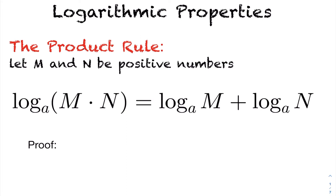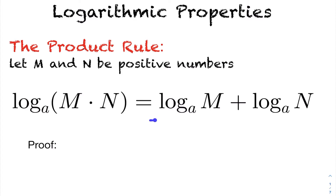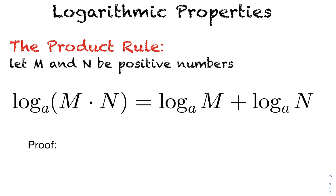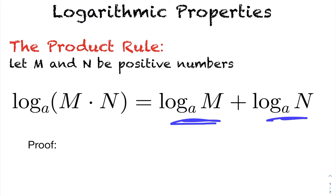In today's lesson we're going to be looking at logarithmic properties. The first property is the product rule. We're going to let m and n be two positive real numbers. We want to show that the logarithm of base a acting on the product m times n is equal to log base a of m plus log base a of n. When a logarithm acts on a product of two expressions, you can break those apart and separate them by addition.